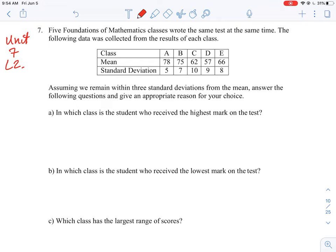It says here we have a set of data where we have the mean for scores for a set of classes and along with their standard deviation, and it tells us that within three standard deviations from the mean, all of these values are contained within it.